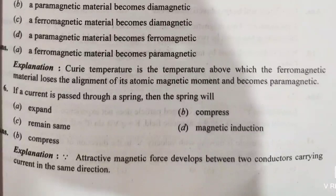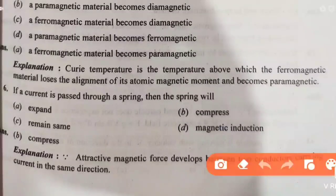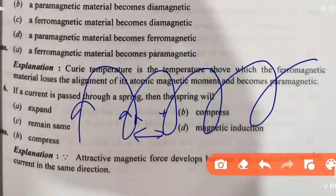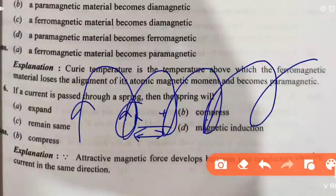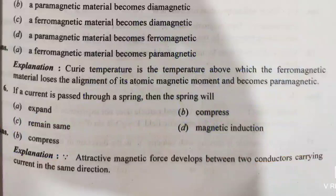Next: if a current is passed through a spring, the spring will compress. Because the current through the spring creates a magnetic force that attracts the coils toward each other, causing the spring to become tightly bound and compress. So the answer is: compress.